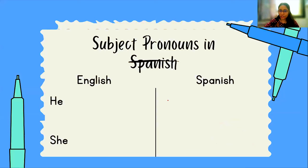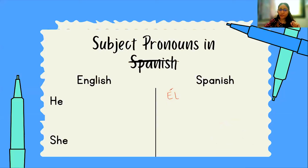He and she — very simple. 'Él' — L with an accent on the E. The accent is mandatory; you cannot skip it. If you do not write this accent, it will change the meaning of the word 'el.' And 'she' is 'ella' — E-L-L-A. So: he is 'él,' she is 'ella.'